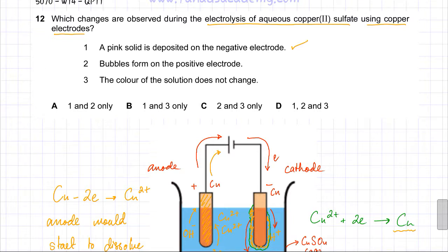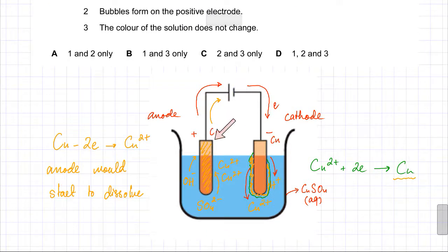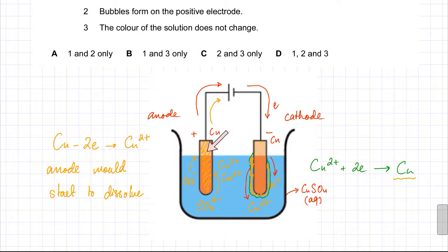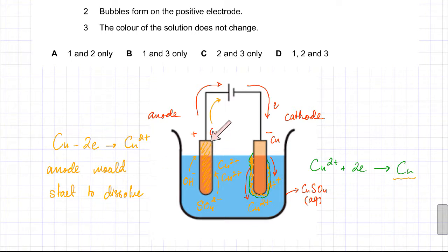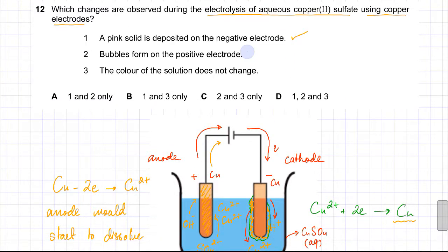The second statement says bubbles form on the positive electrode. However, at the positive electrode, it is the copper electrode itself that loses electrons to form Cu²⁺ ions. The anode dissolves — no gas is produced and no bubbles are formed. So the second statement is incorrect.